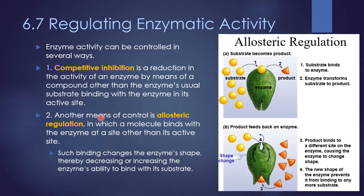Another way of controlling an enzyme is by allosteric regulation. Here, something — such as the product that the enzyme created — binds to another spot on the enzyme. This changes the shape of the enzyme so the normal substrate no longer fits into it. The substrate floats around waiting until that molecule leaves and the enzyme returns to its correct shape, allowing the chemical reaction to occur again. These are two different ways your body can either plug up enzymes or change their shape so those reactions don't occur when they're not needed, and then allow them to resume when needed.